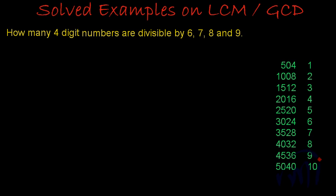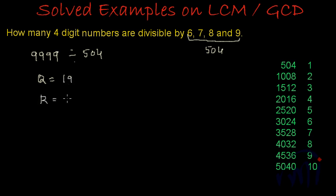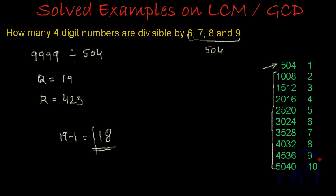Now if I ask you: how many total four-digit numbers are divisible by 6, 7, 8 and 9? The largest four-digit number 9,999 when divided by the LCM of 6, 7, 8 and 9 — which is 504 — gives quotient 19 and remainder 423. In the multiplication table of 504, only the first multiple (504 itself) is a three-digit number and all the others are four-digit. So the total four-digit numbers divisible by 504 — and in turn by 6, 7, 8 and 9 — is 19 minus 1, which is 18.